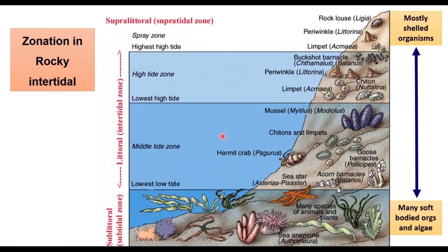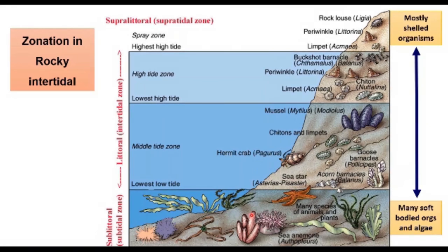Here we look into the typical zonation of organisms — the assemblage of organisms in the rocky intertidal zone. If you look at the low tide part, it is mostly submerged with organisms. These are soft-shelled organisms because they don't want to be exposed much to sunlight and they don't have the capacity to withstand longer durations of exposure.